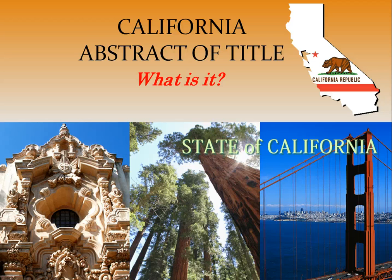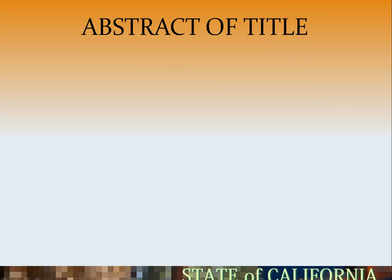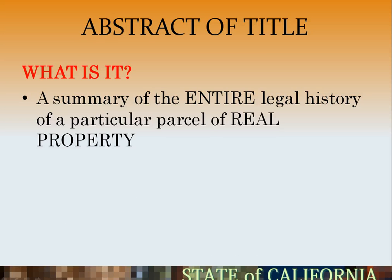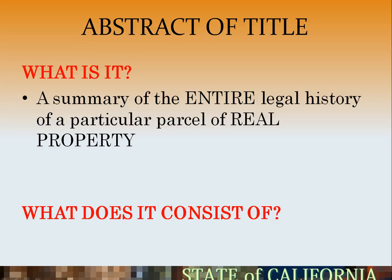California Abstract of Title — what is it? It's a summary of the entire legal history of a particular parcel of real property.